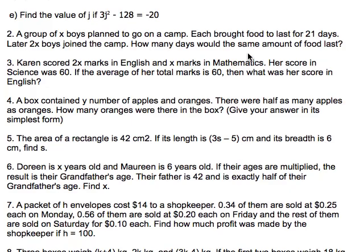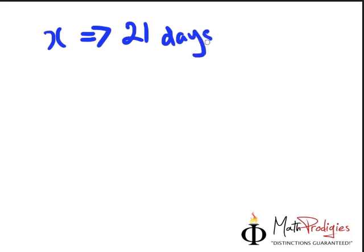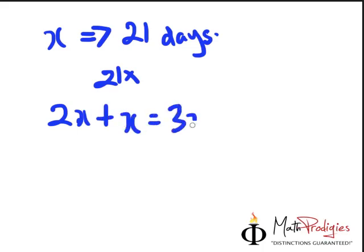They did not tell us what number. So we're just going to assume x boys can last us for 21 days. So that means the number of days is actually 21 times x, in other words, 21x. Then another group of boys came in. So 2x boys came in and then you plus the current group of boys, which is 2x plus x gave me 3x.